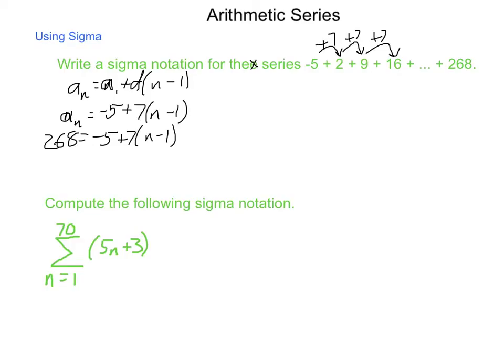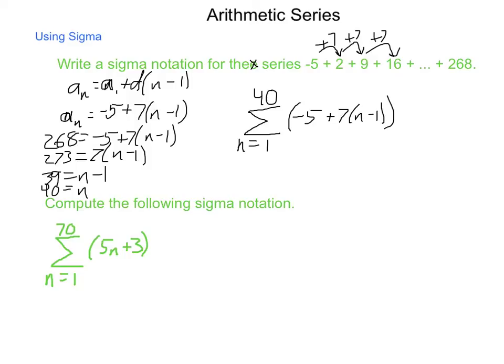So 268 is equal to negative 5 plus 7 times n minus 1. Solving for n, we are going to add 5. So 273 equals 7 times n minus 1. Divide by 7, we have 39 equals n minus 1. Solving for n, we add 1, n equals 40. So 268 is the 40th entry in this sequence. So sigma notation gives us the sum from n equals 1 to 40 of negative 5 plus 7 times n minus 1. That is converting it from a chain presentation of a series into sigma notation.